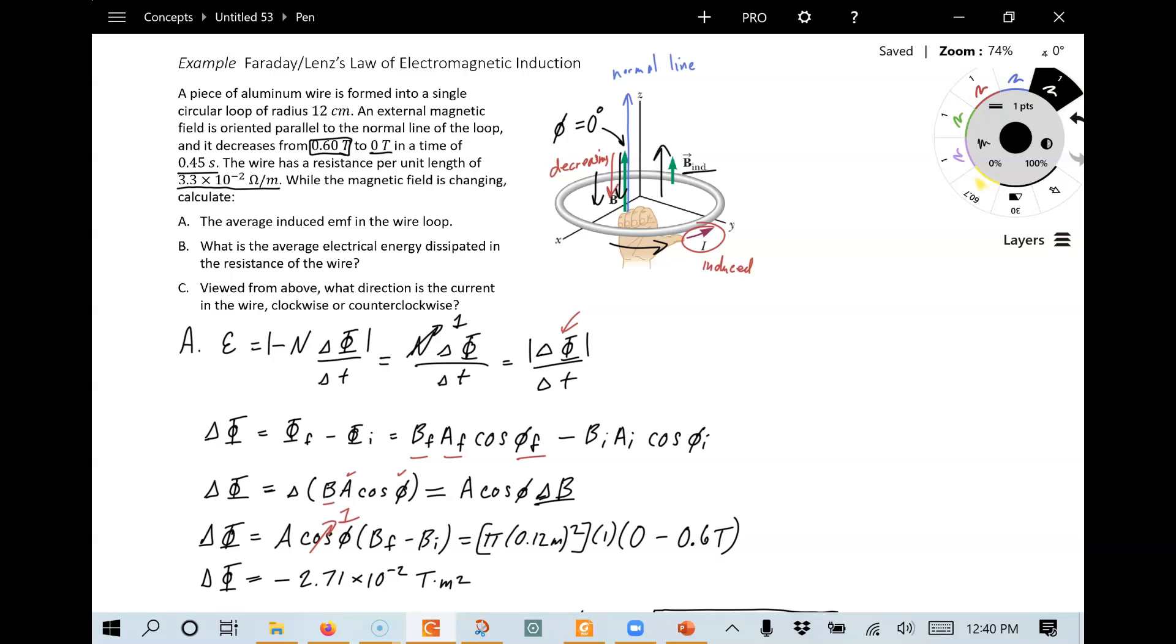So the first thing you do is you look at how the change in flux is. It's pointed up and it's decreasing. Therefore, nature responds, I need to make one point up because I don't want it to decrease. How do I make a magnetic field point up by using the loop as an electromagnet? Well, we put a current in it and we do it looking down. That would be counterclockwise. So the counterclockwise current opposes the change. That current is the induced current due to electromagnetic induction.